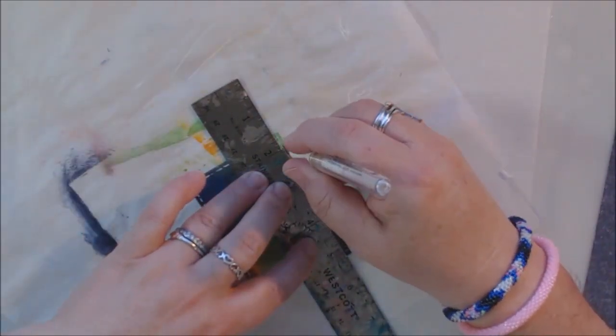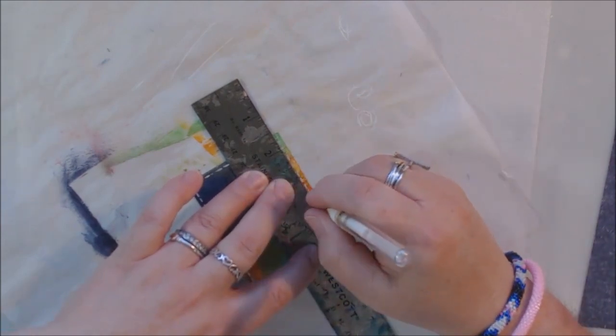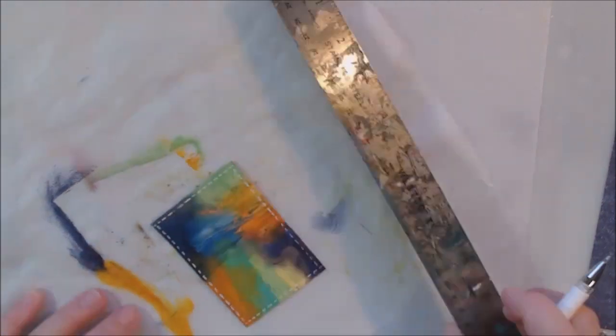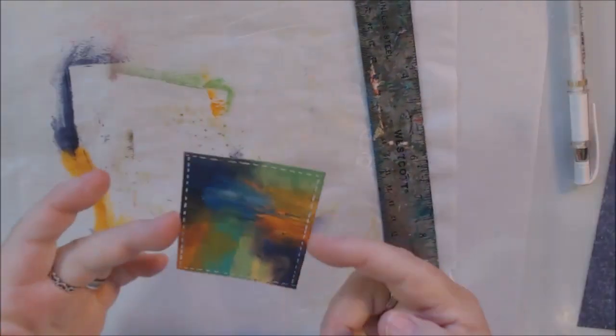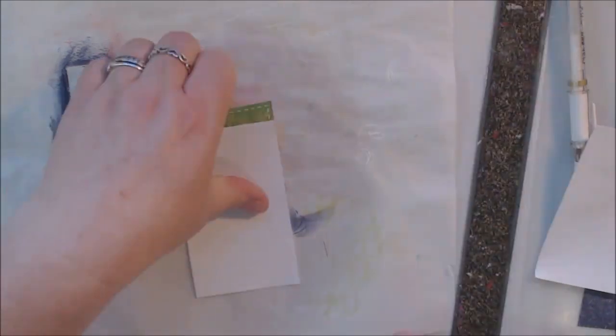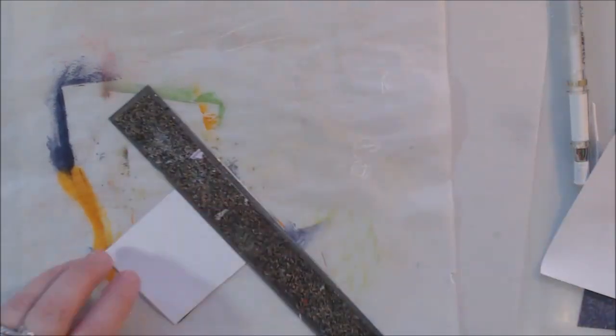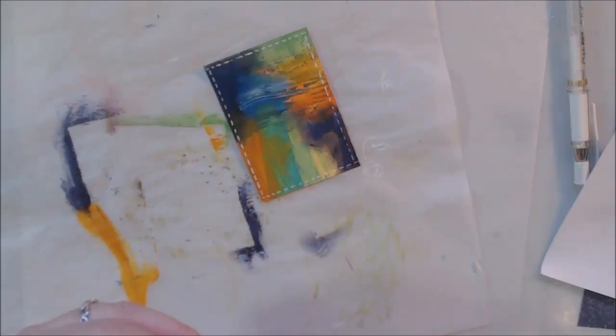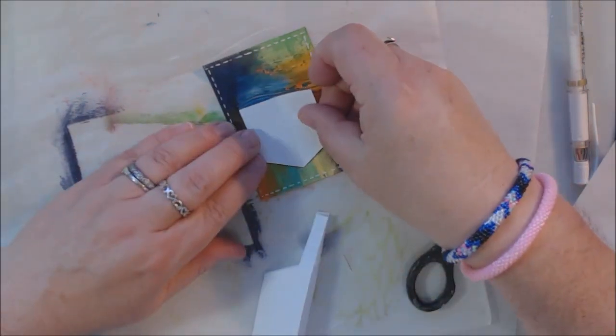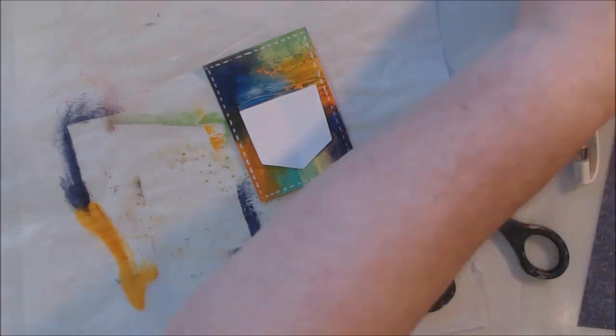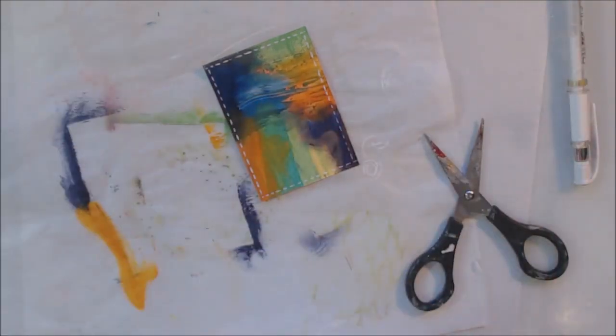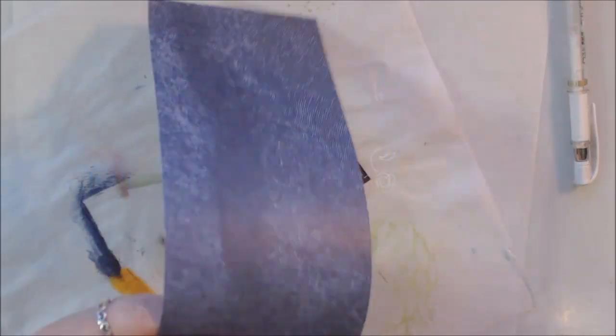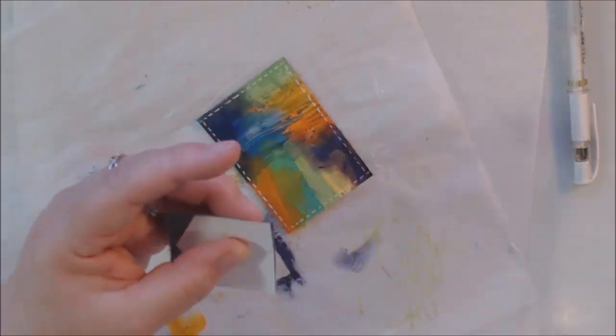I took a white gel pen, a Sakura signo ball pen I think it's called. I don't usually use those, I usually use the Posca. I made stitching all the way around the outside of the card, and then I made myself a little pattern out of scratch paper for the shape of a pocket, like a pocket on the back of jeans.